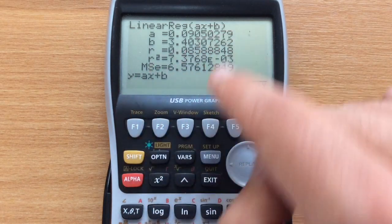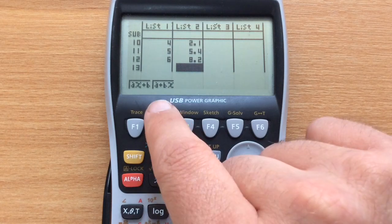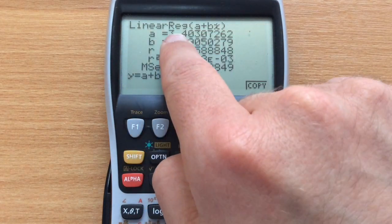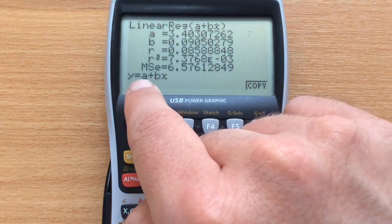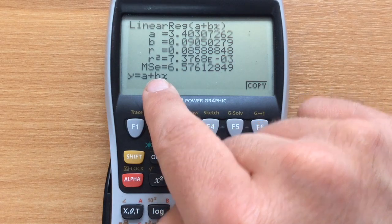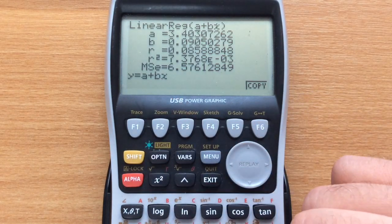We did Y equals AX plus B. Just to show you, if I press exit, we can do A plus BX. It's exactly the same thing, but now these two are around the other way. A is my number on its own, B is the coefficient of X. That's how you can do regression and correlation very simply with a graphical calculator.